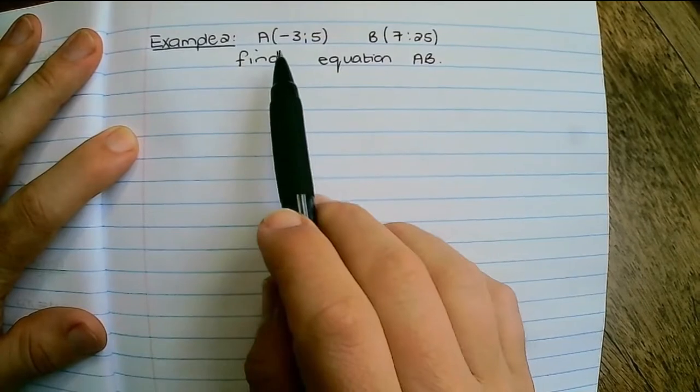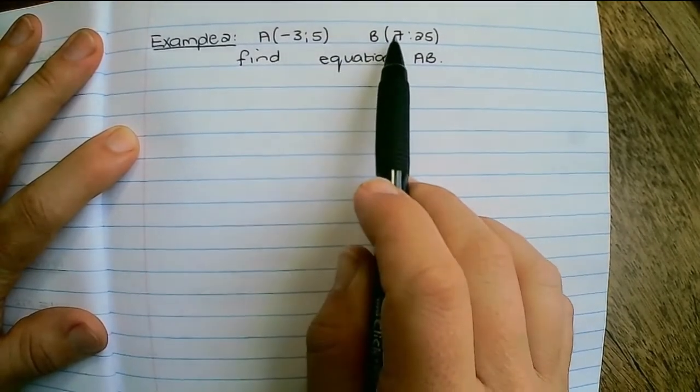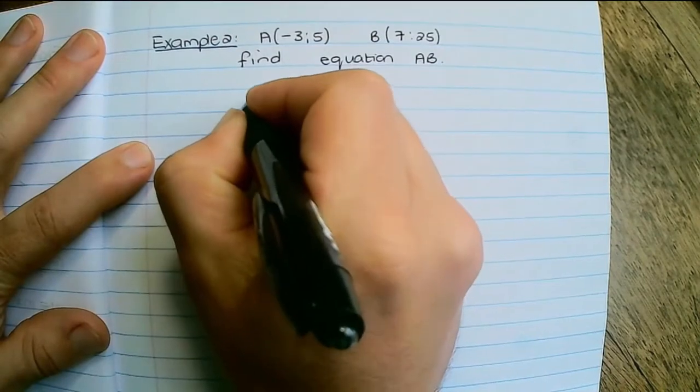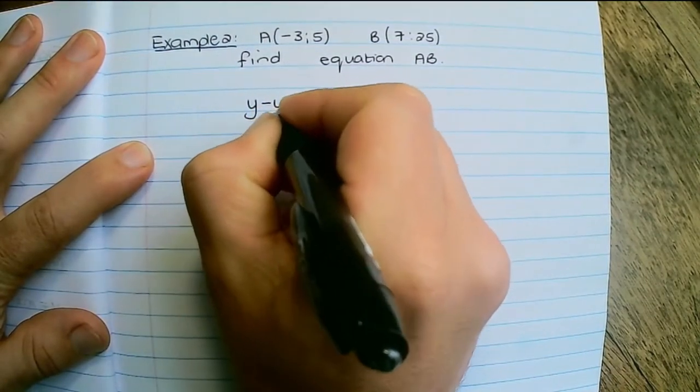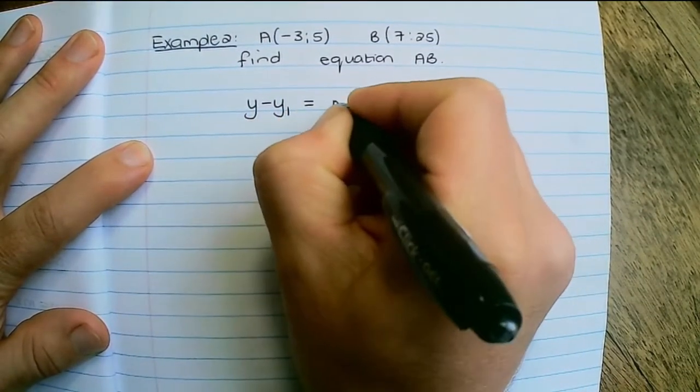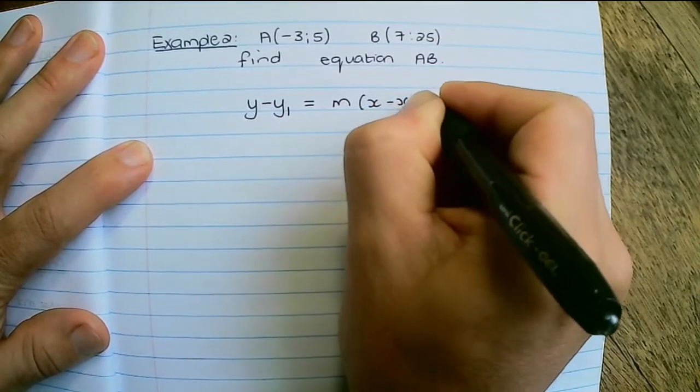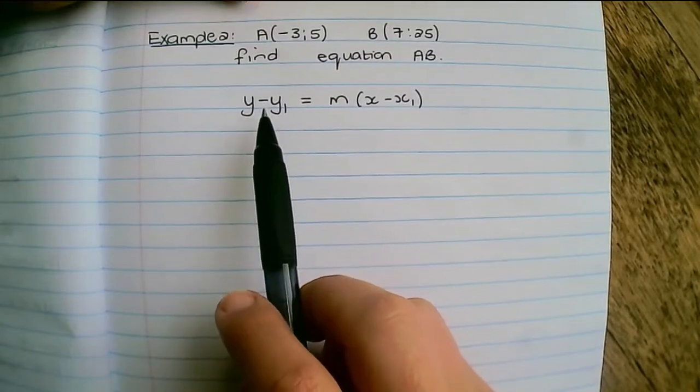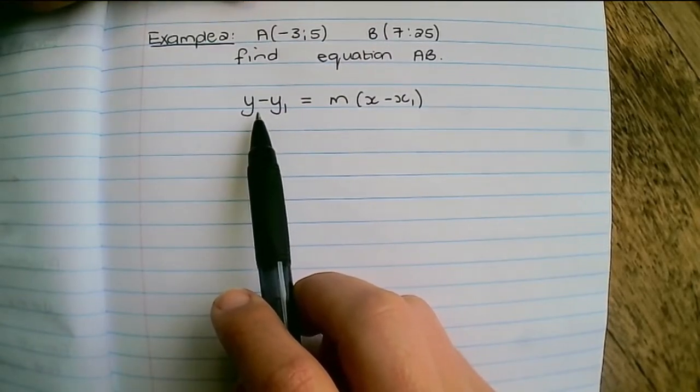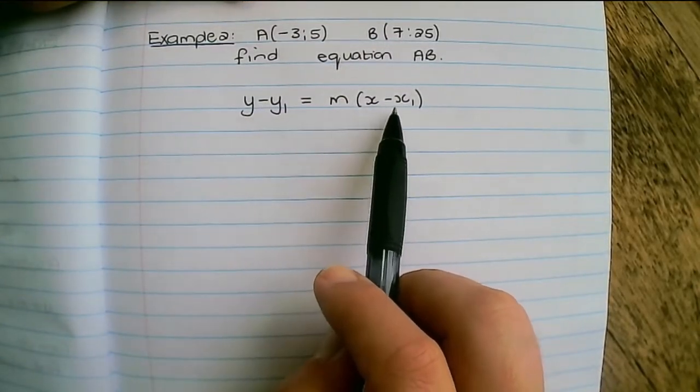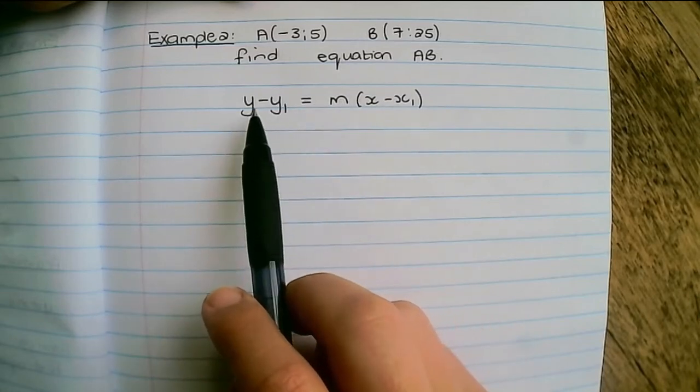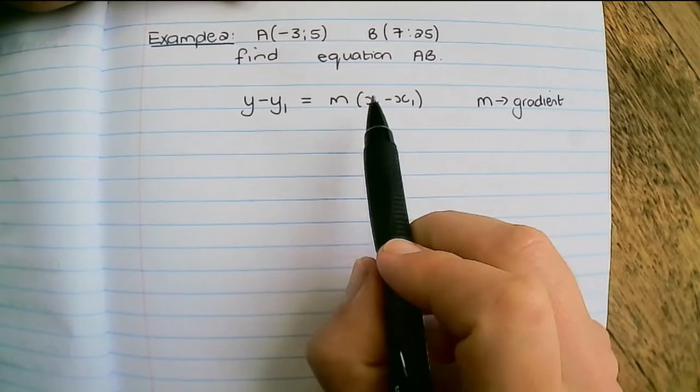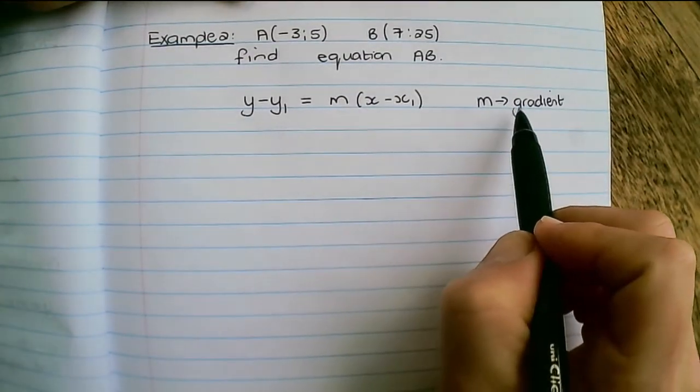In this example we'll use the same two coordinates to find the equation of the line AB but now we will use the formula which we find on our grade 12 formula sheet as part of our examination. So in grade 12 you will get a formula sheet as part of your question paper and this formula for a straight line would be on there. M represents the gradient of the line and x1 and y1 a point on that line.